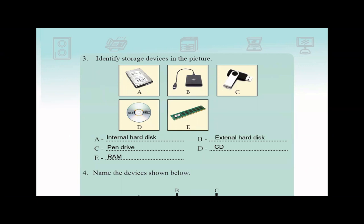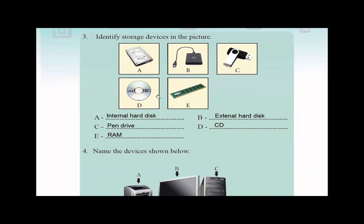Identify storage devices in the picture. So they have given few storage devices and they are asking you to identify each of them. So A is an internal hard disk. Sometimes you may have not seen this in real life, but this is how the internal hard disk looks like. And here, external hard disk is the portable hard disk. C is the pen drive. D is actually these are like discs, CDs, DVDs, those things, right? Blu-ray discs and all. So this is the wrap.